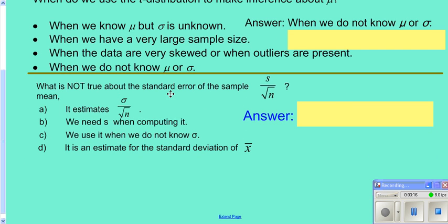So, which one of these is not true about our standard error? Well, we use it to estimate this. However, your answer is B, because we have to use this when we don't know sigma, and this estimates the standard deviation of our X bar.